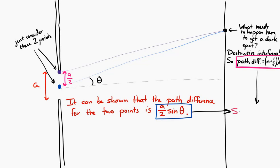Okay, so if I have a dark spot there, then the path difference, which is a over 2 sine theta, has to equal n plus 1 half times lambda. So I have this expression.